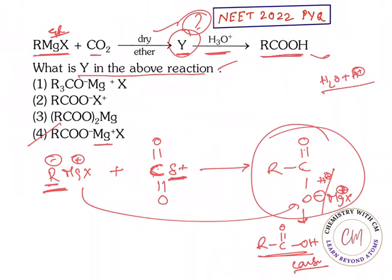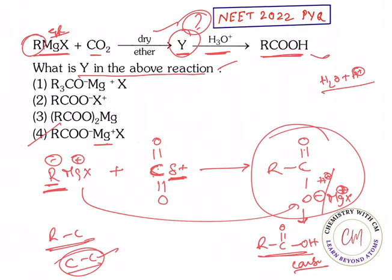In this reaction you need to know two important things. First, an R-C bond is formed, meaning a new carbon-carbon bond is formed. Second, this reaction is used to prepare carboxylic acids with higher carbons. For example, if the number of carbons in R is two, you can prepare a carboxylic acid with three carbons, because the carbon in CO₂ gets added. You have to prepare for the exam — reaction mechanisms are very important. NEET is not a very tough exam compared to IIT-JEE.